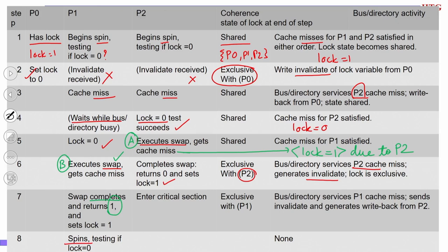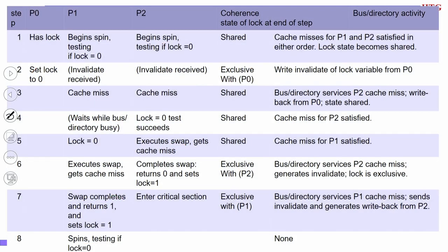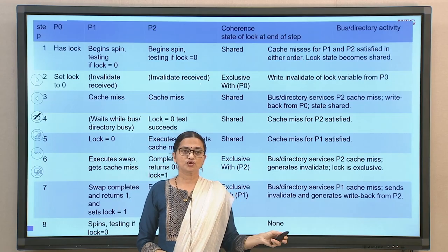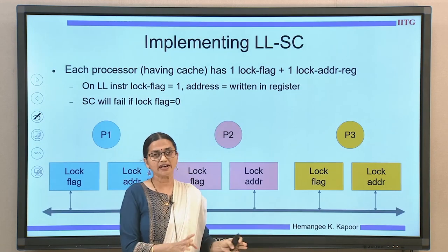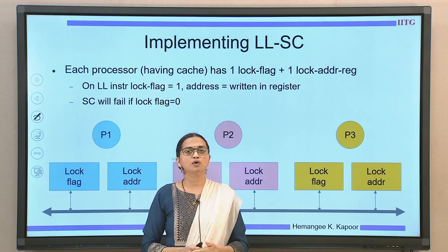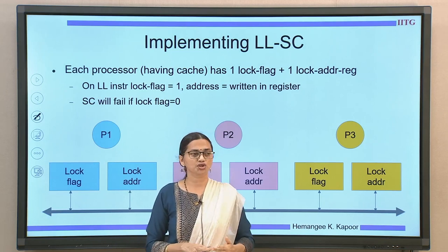This demonstrates how a locally cached copy enables first doing the testing and then attempting the swap — showing the interplay between synchronization, atomic instructions, and a cache-coherent directory or snooping-based protocol. We have studied how to implement atomic instructions. The third implementation variant is the LL (Load-Link) and SC (Store-Conditional) instruction pair. LL and SC together act as an uninterruptible pair — the lock is only considered acquired when both succeed.